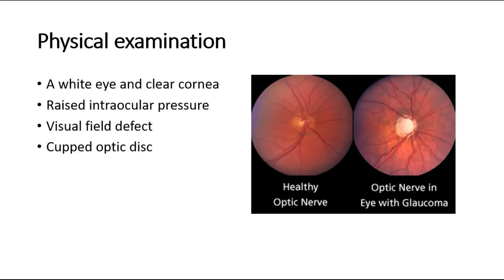Signs of glaucoma include white eye and clear cornea, raised intraocular pressure, visual field defect, and optic disc cupping. Everyone has an optic disc cup as a normal structure, but in glaucoma the cup becomes very large relative to the whole optic disc. This optic disc cupping refers to the cup appearing to become larger over time, often due to optic nerve fibers dying from ischemia.